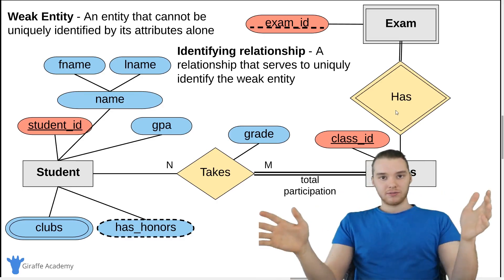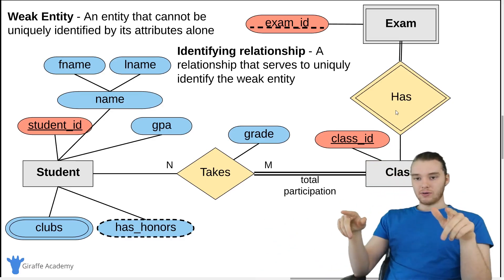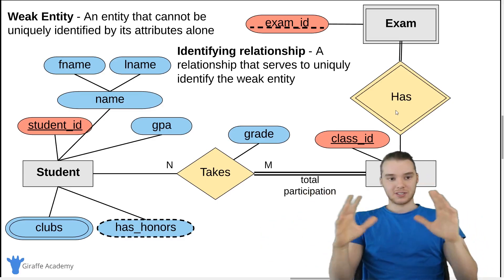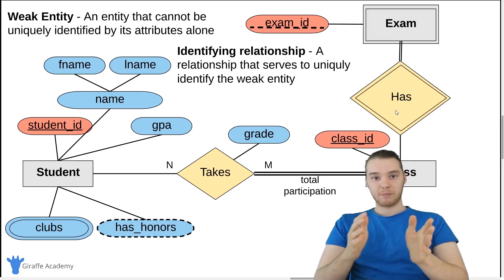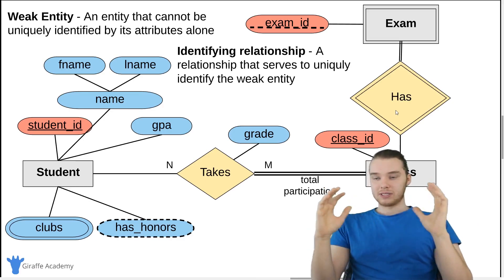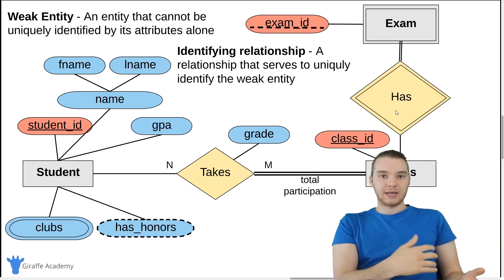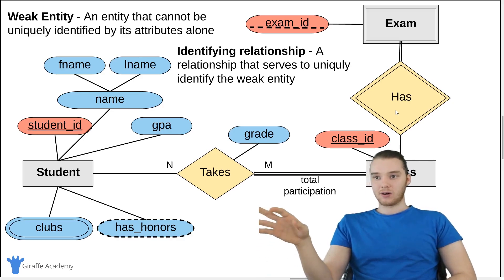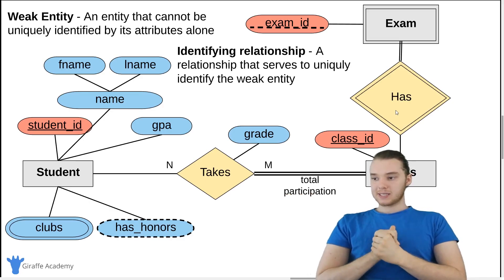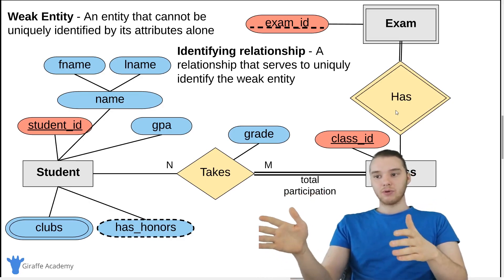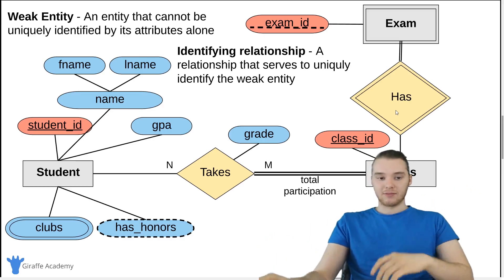That covers all the basic things you're going to encounter in an ER diagram. Everything you see here is the kind of stuff you might see in an ER diagram, and you can use all of these different symbols to represent a data model. We can take this ER diagram and actually convert it into an actual database schema, which is why these are really useful as a middleman between requirements and the actual database schema. In the next video, we're going to walk through an example of constructing our own ER diagram, which should give you guys more of an idea of how these work.